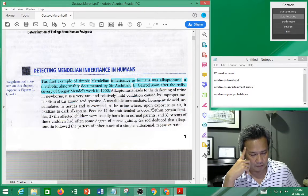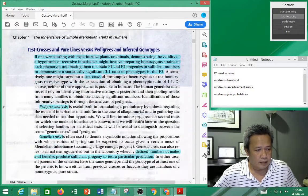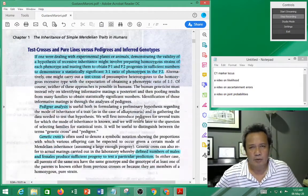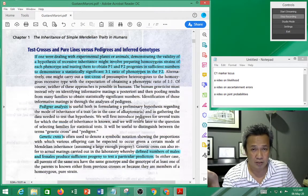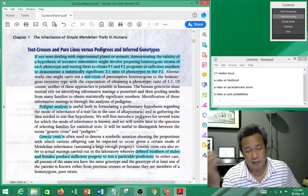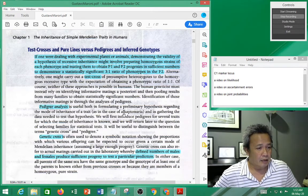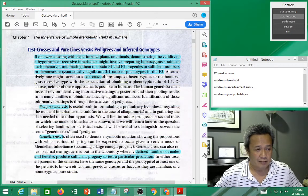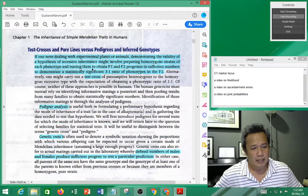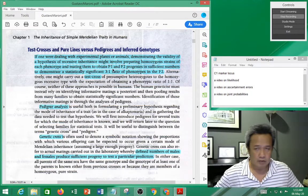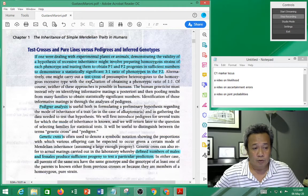It starts off looking at Mendelian inheritance. In normal genetic crosses, in order to determine the inheritance pattern of a particular gene, you do crosses. For example, if you're dealing with experimental plants or animals, demonstrating the validity of a hypothesis or recessive trait might involve preparing homozygous strains, then mating them to obtain F1 and F2, and then calculate ratios. This is how you do it with Drosophila and so on. Sometimes you need to do test crosses.